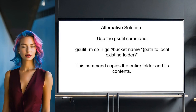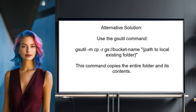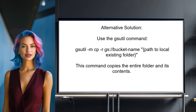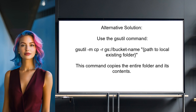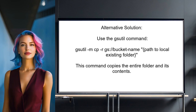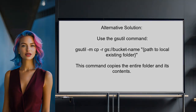An alternative solution from another user suggests using the gsutil command to download folders from Google Cloud Storage. They recommend the command: gsutil -m cp -r gs://bucket-name, followed by the path to your local existing folder. This method effectively copies the entire folder and its contents to your local machine.